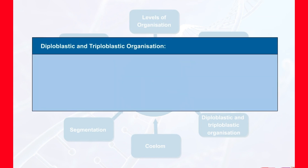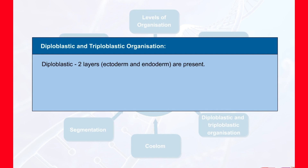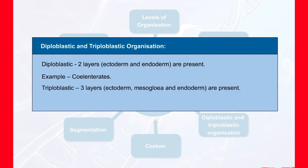Diploblastic and triploblastic organization: animals in which cells are arranged in two embryonic layers — an external ectoderm and an internal endoderm — are called diploblastic animals; example, coelenterates. Some animals are triploblastic, meaning they have a germinal layer mesoderm in between the ectoderm and endoderm; examples are members of Platyhelminthes to chordates.